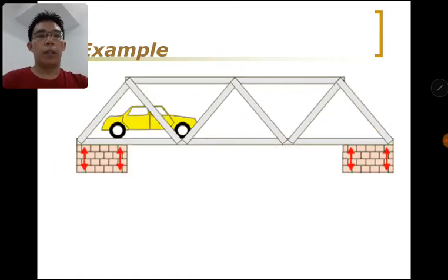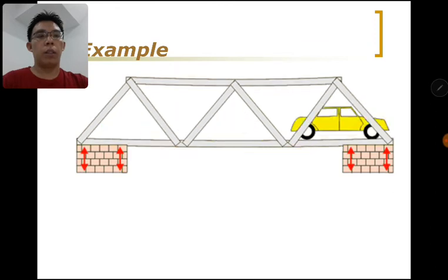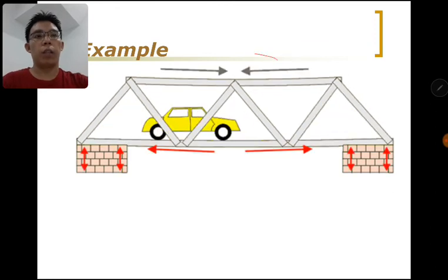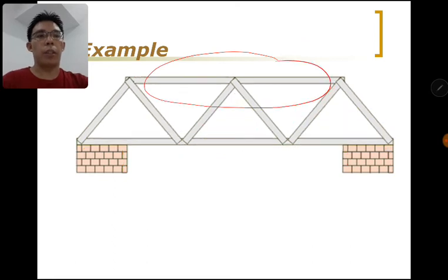Now an example is when a car went past a bridge. The top part undergoes compression and the bottom part undergoes tensile stress or extension.